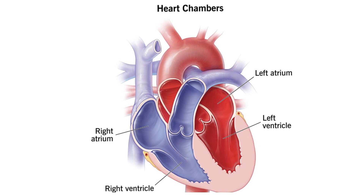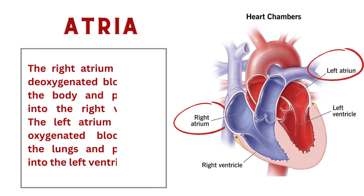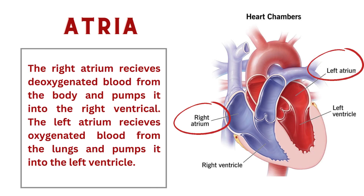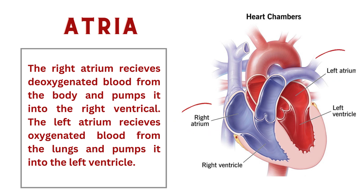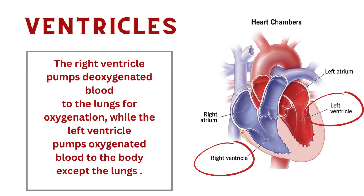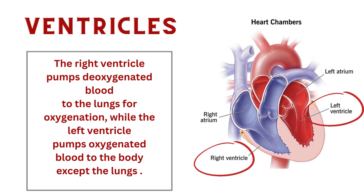Let's discuss the functions of these chambers. The two atria are thin-walled chambers that receive blood from the veins. The right atrium receives deoxygenated blood from the body and pumps it into the right ventricle. The left atrium receives oxygenated blood from the lungs and pumps it into the left ventricle. The two ventricles are thick-walled chambers that forcefully pump blood out of the heart. The right ventricle pumps deoxygenated blood to the lungs for oxygenation, while the left ventricle pumps oxygenated blood to the body except the lungs.